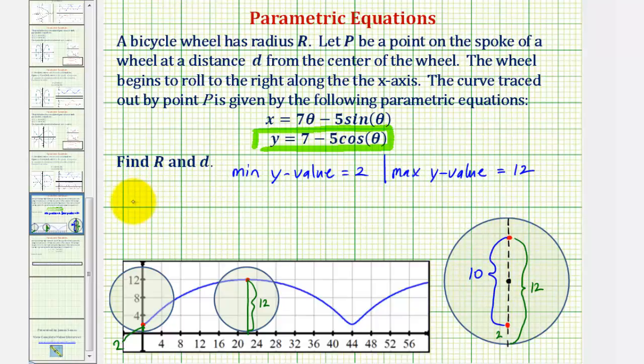So to show some work, we can say that d is equal to 12 minus two, and then divide it by two to get half of it, which would be 10 divided by two, which equals five.